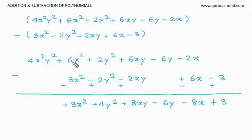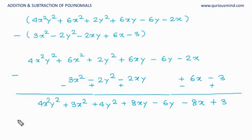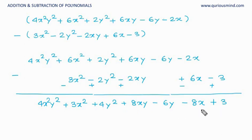For x square: 6x square minus 3x square — sign of the greater is plus, so 6 minus 3 gives plus 3x square. And 4x square y square remains as it is. So our answer is: 4x²y² + 3x² + 4y² + 8xy − 6y − 8x + 3.